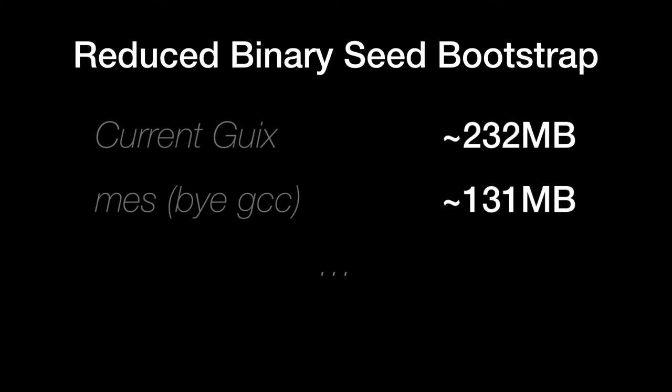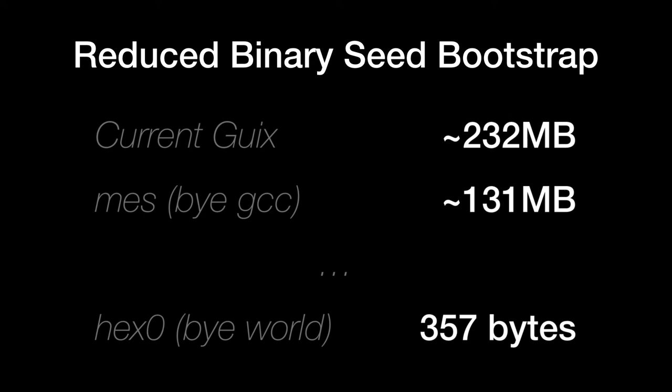Even more exciting is the work being pursued by Orion's J on Hex0 — a 357-byte, heavily commented, self-hosting hex assembler that will eventually be used as the only trusted binary. The holy grail for bootstrappability will be connecting Hex0 to MESS.